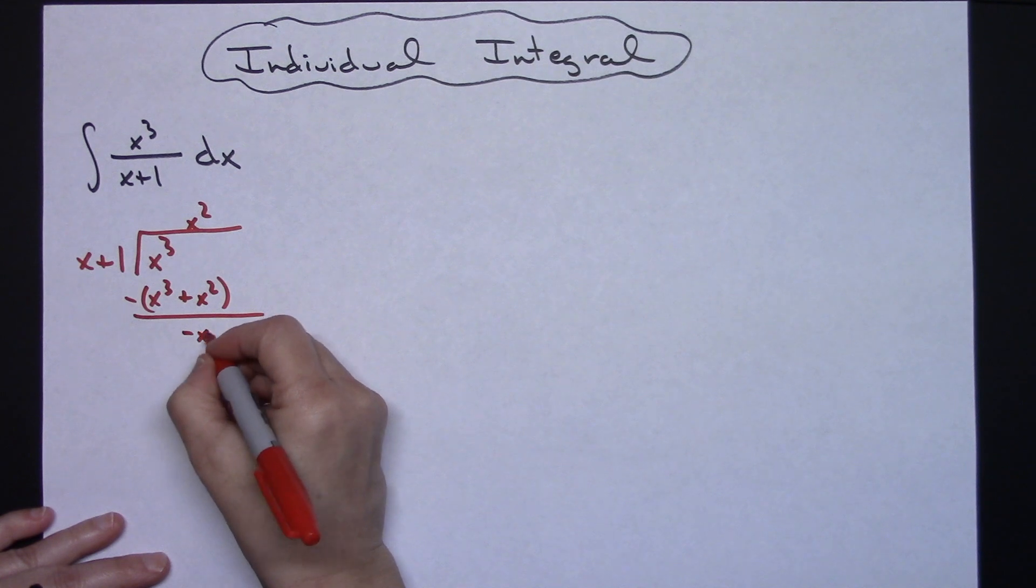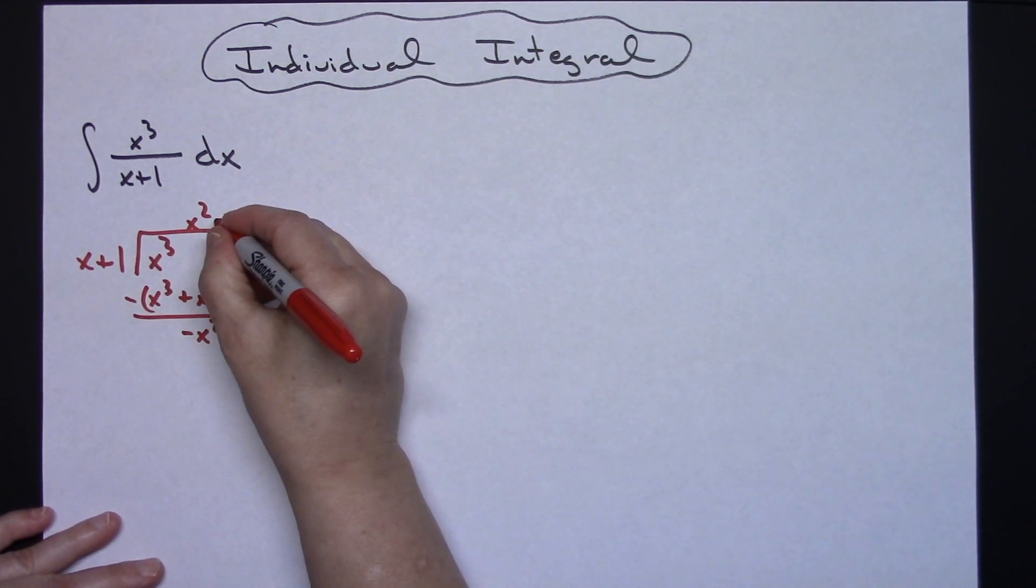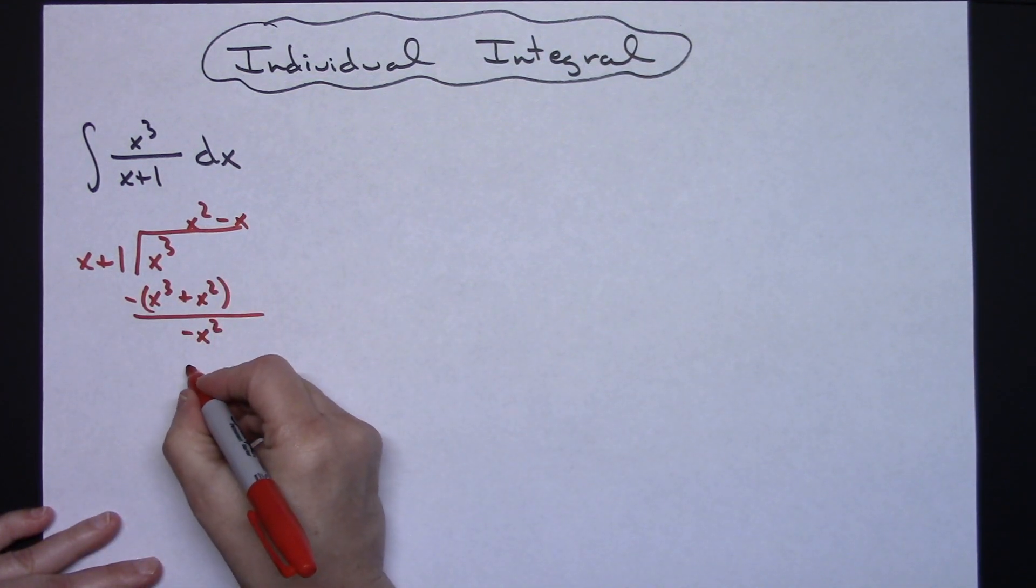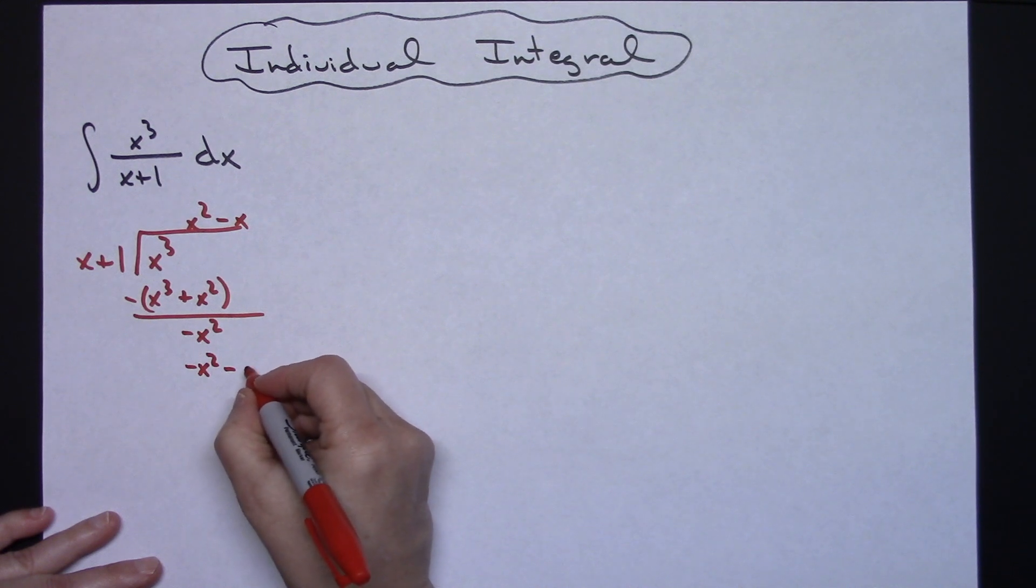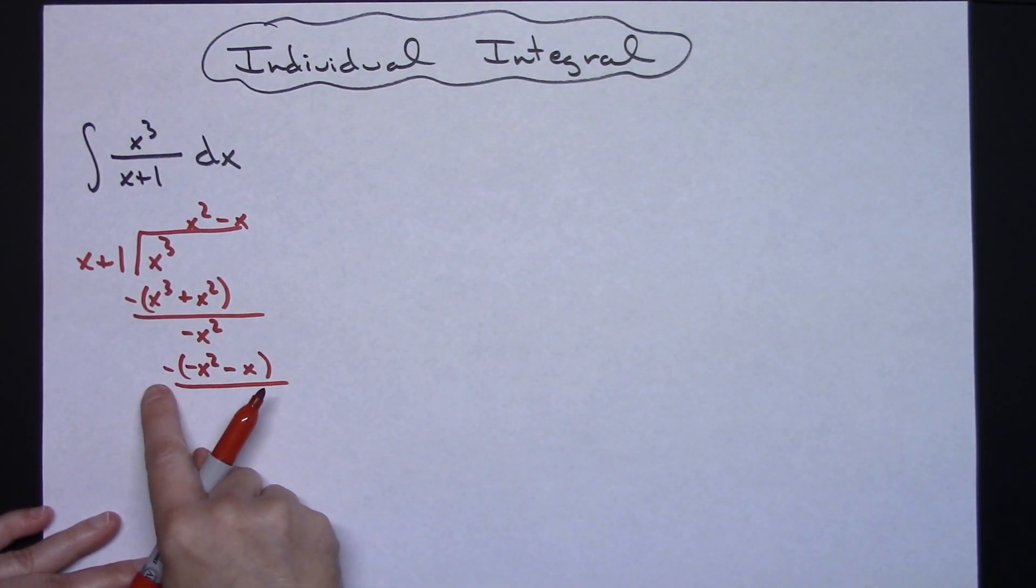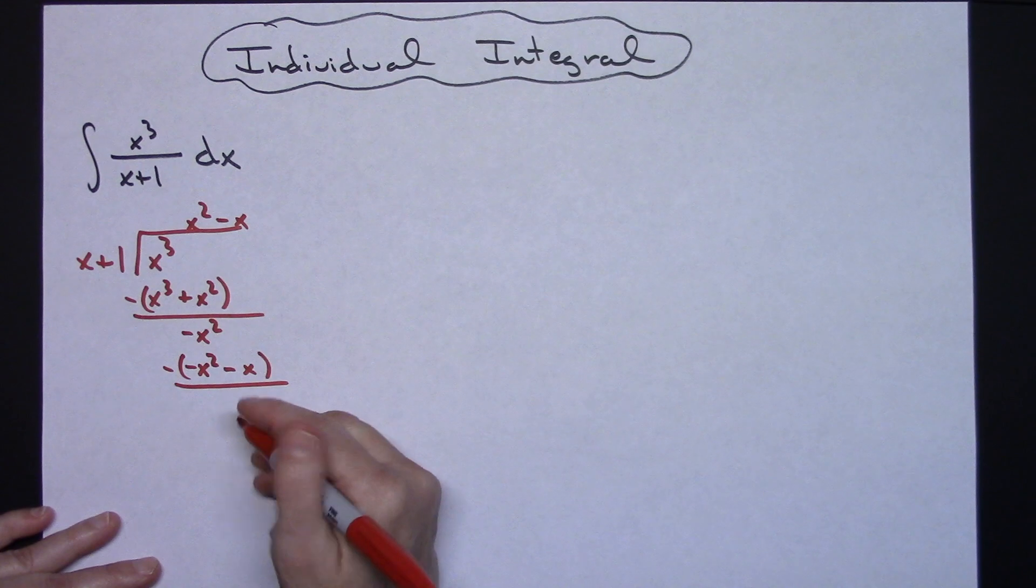X going into a negative X² needs a negative X. Multiplying coming around I will have a negative X² minus an X. Subtracting that quantity, negative X² minus a negative X², those will fall out. Zero minus a negative X will leave me with a positive X.